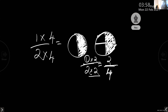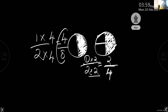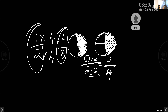What is 1 times 4? 4. And 4 twos are 8. So children, 4 by 8. So 1 by 2, 2 by 4, and 4 by 8 — they are all equivalent fractions.